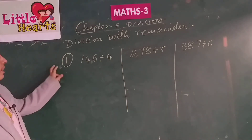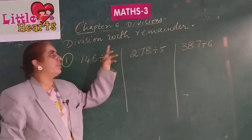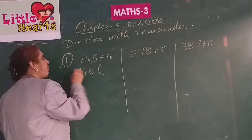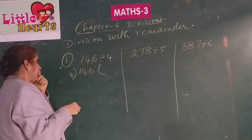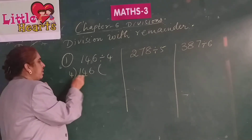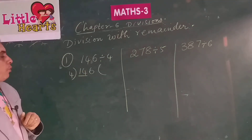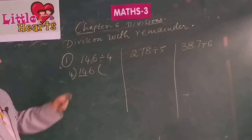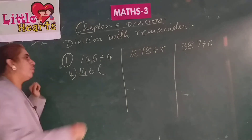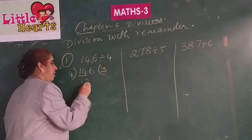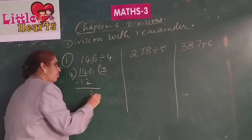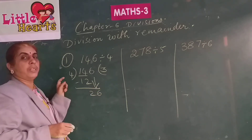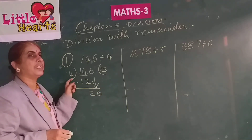Division of a 3-digit number by a single-digit number with remainder. Take 146 divided by 4. As 1 is less than 4, consider 2 digits: 14. Read 4 table: 4 threes are 12; 14 minus 12 is 2. Bring down 6 to get 26. Read 4 table: 4 sixes are 24; 26 minus 24 is 2. So the quotient is 36 and the remainder is 2.